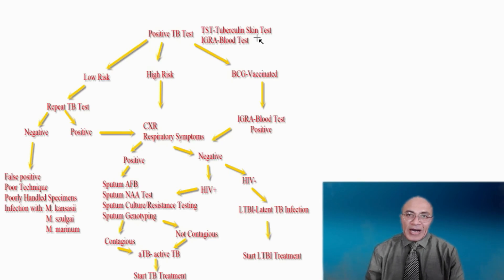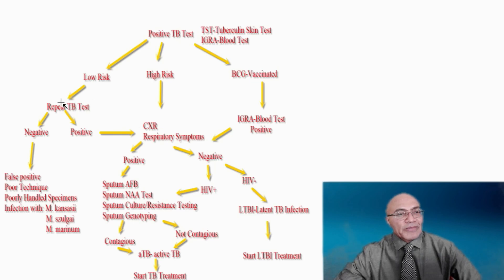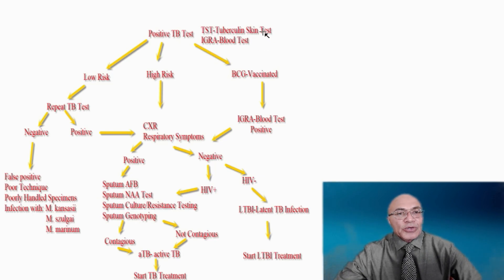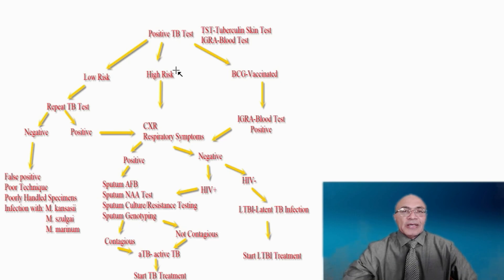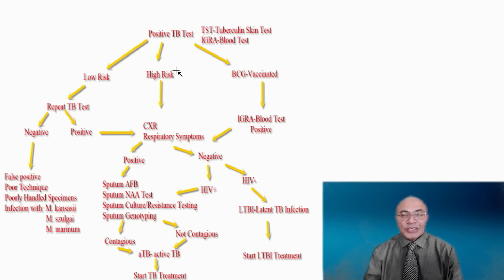If the repeat test is positive, then we can assume that this person is in fact infected with mycobacterium tuberculosis, and we would move on to the next step. If the test is negative, however, then we need to consider that the original test was a false positive. In the case of the TST tuberculin skin test, it can be false positive if the technique used to place the test was less than optimal, or if the measurement of the induration was not accurate.